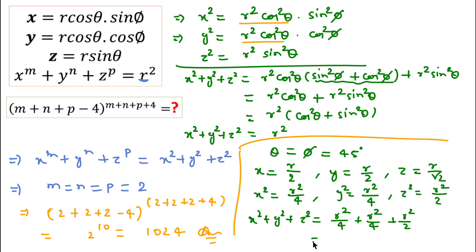The same result follows: putting r square here and equating, we get m and p equal to 2, and we once again get 1024 as the answer. Thanks for watching this video — please like, share, and subscribe to this channel.